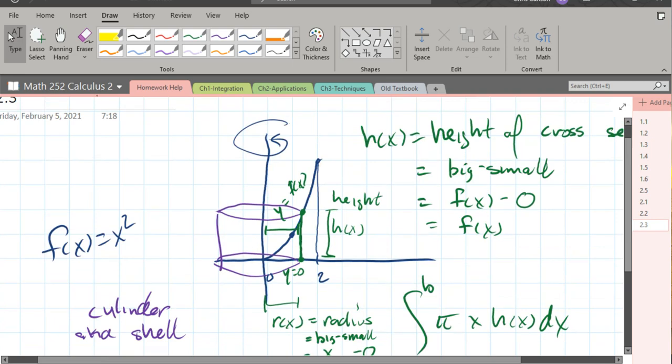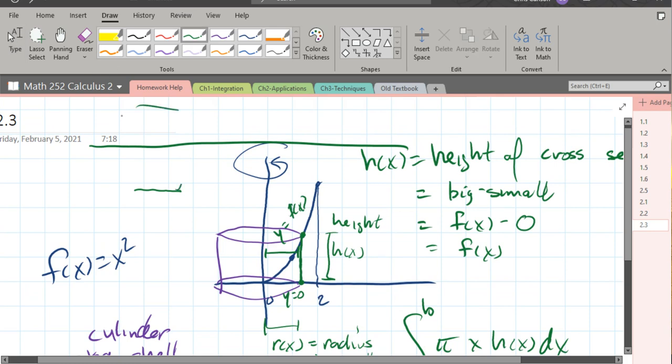If you rotate about a horizontal line, then the role of x and y are going to switch, and your cross-section would then, instead of be vertical, it would be horizontal, so when you rotated it, you would get a cylinder like this.